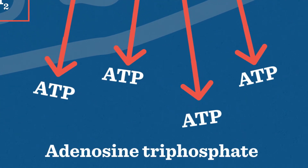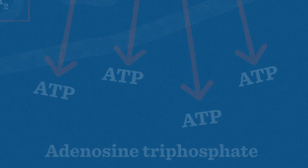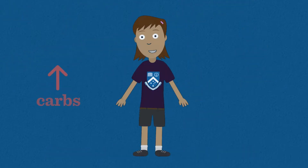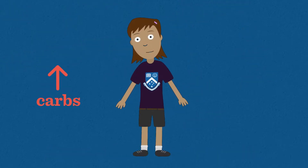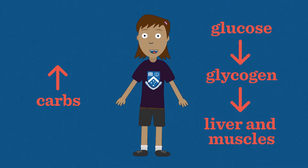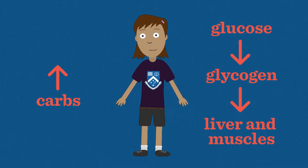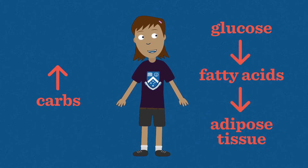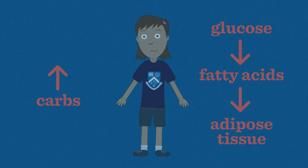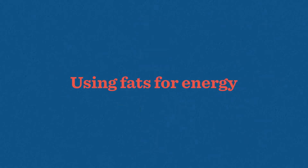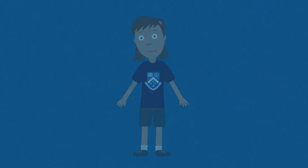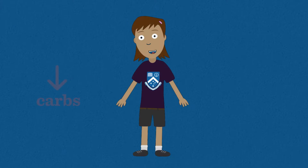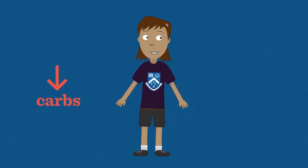ATP, or adenosine triphosphate, is the molecule that provides energy to all the cells in the body. If more carbohydrates are consumed than needed, the excess glucose will first be stored as glycogen in the liver and muscles. Then, when those stores are full, excess glucose will be converted to fatty acids and stored in adipose tissue.